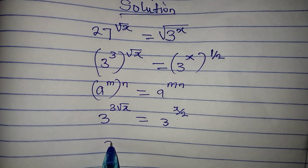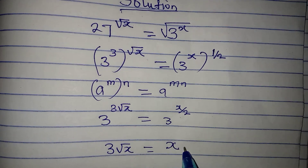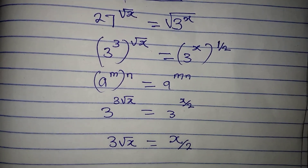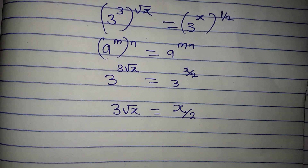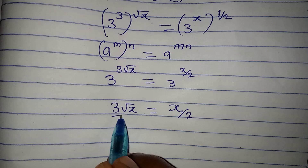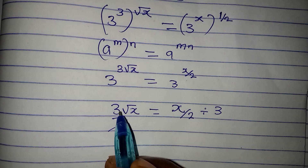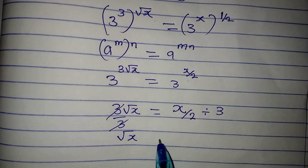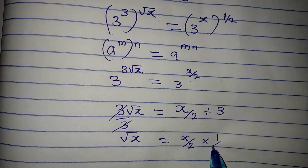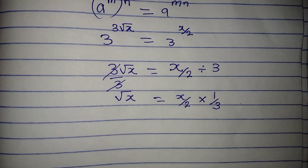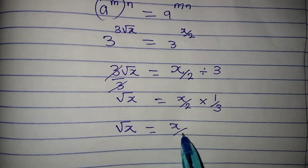So 3 root x equals x over 2. Next, divide both sides by 3: 3 will cancel, and root x equals x over 2 multiplied by 1 over 3. So root x equals x over 6.